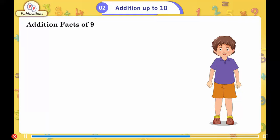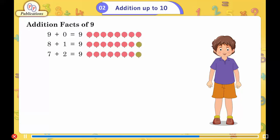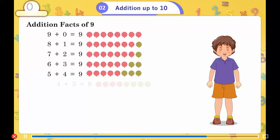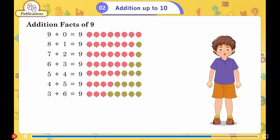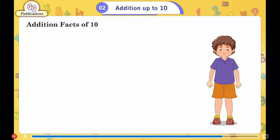Addition facts of 9: 9 plus 0 is equal to 9, 8 plus 1 is equal to 9, 7 plus 2 is equal to 9, 6 plus 3 is equal to 9, 5 plus 4 is equal to 9, 4 plus 5 is equal to 9, 3 plus 6 is equal to 9, 2 plus 7 is equal to 9, 1 plus 8 is equal to 9, 0 plus 9 is equal to 9.